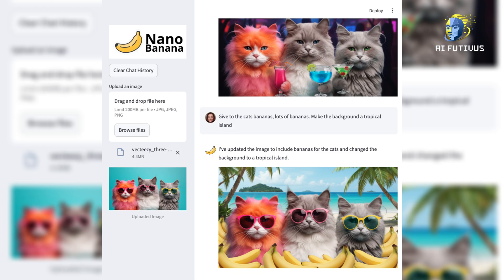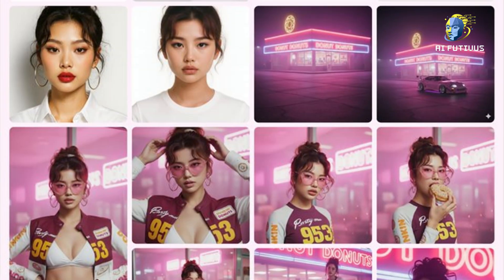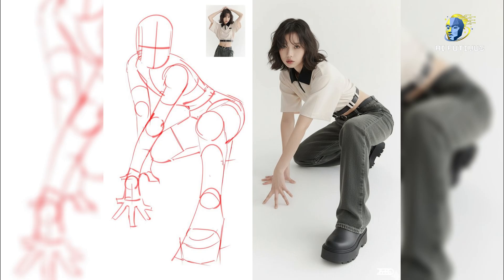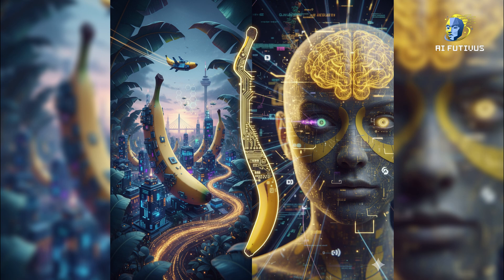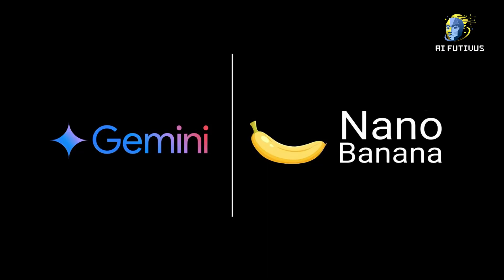This is not just an update. It's not just another flashy AI tool. This could change the way we create, the way we design, the way we imagine the digital world. So the big question is: what exactly is Nano Banana? Why is it inside Google's Gemini app now? And more importantly, how can you actually use it today?